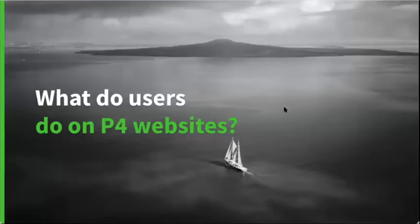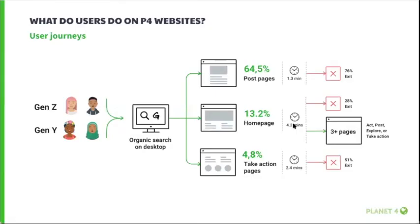Now that we know what user goals are, let's see what they actually do when they visit P4 sites. Based on Google Analytics, we identified two main user journeys. The first is Gen Z and Gen Y users coming from organic search on desktop — the majority land on post or take action pages, which are also the most visited. When starting their journey on post pages, users spend about a minute reading the page, then 76 percent leave the site.